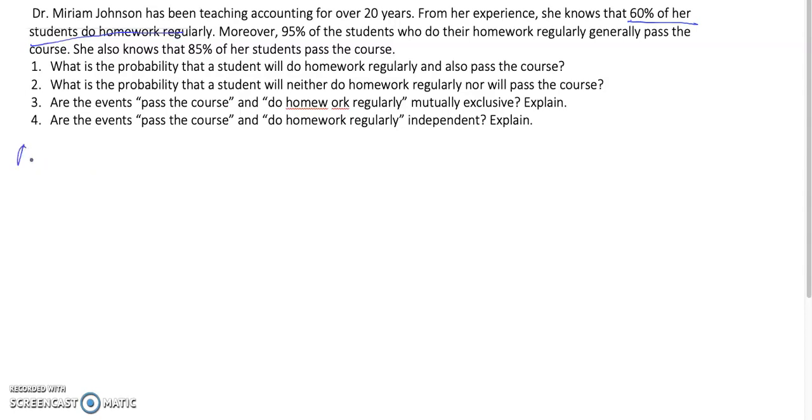So, let's define A as do homework regularly, where P(A) equals to 60%. 90% of the students who do their homework regularly generally pass the course. So, we have do homework and pass the course, 95% do homework, pass the course.